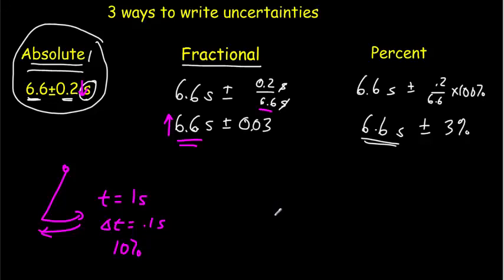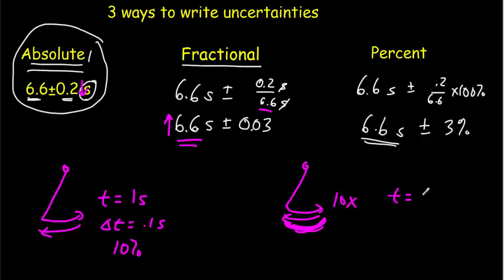However, we're going to improve our measurements if instead of just letting the pendulum go back and forth once, we let it go back and forth 10 times. Then our total time should be about 10 seconds, and our uncertainty should still be 0.1 seconds. That would mean we've reduced our fractional uncertainty from 10% down to 1% just by increasing the value being measured.